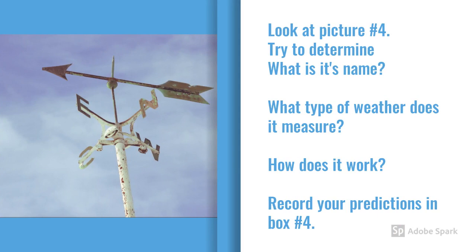Look at picture number four, try to determine what is its name, what type of weather does it measure, how does it work, then record your predictions in box number four.